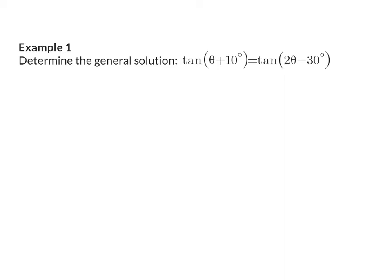Example 1: Determine the general solution of tan(θ + 10) equal to tan(2θ − 30). Here the trig function on the left and right is exactly the same, so the angle given on the right — 2θ minus 30 — will be our reference angle. That reference angle is abstract, not something you calculate with a calculator. We continue following our normal steps: determine the quadrants where tan is positive, which is the first and the third quadrant.